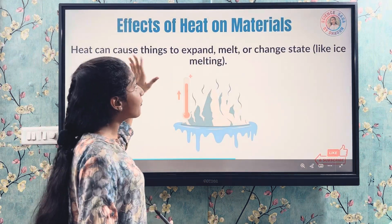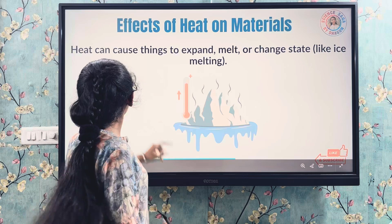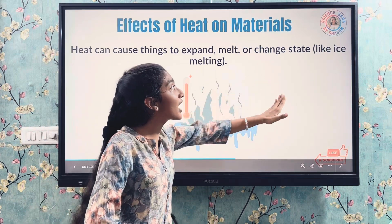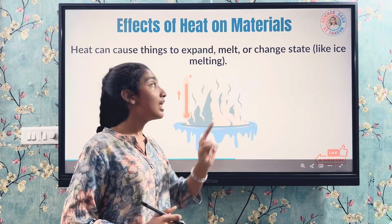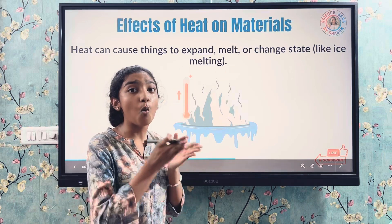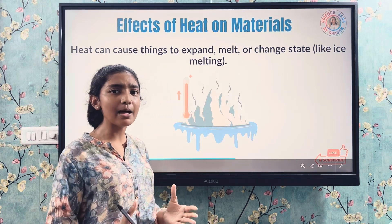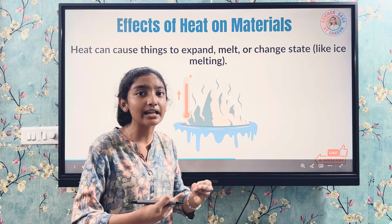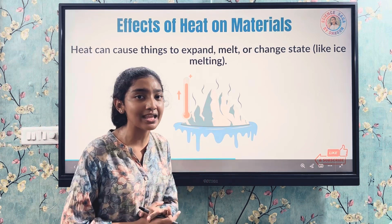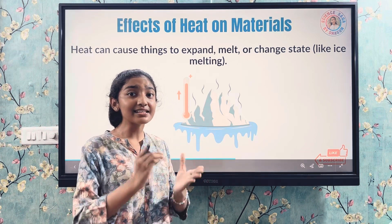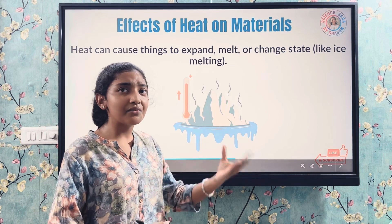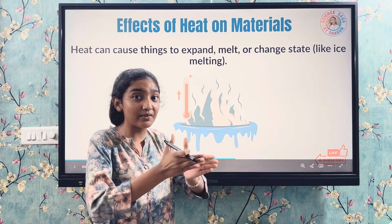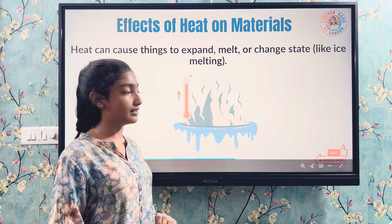Effects of heat on materials — heat can cause things to expand, melt, or change state, like ice melting into water. Solids also expand when heated and occupy more space. That is why when constructing railway tracks or bridges, a gap is left in the middle so that when they expand, there is room for it.